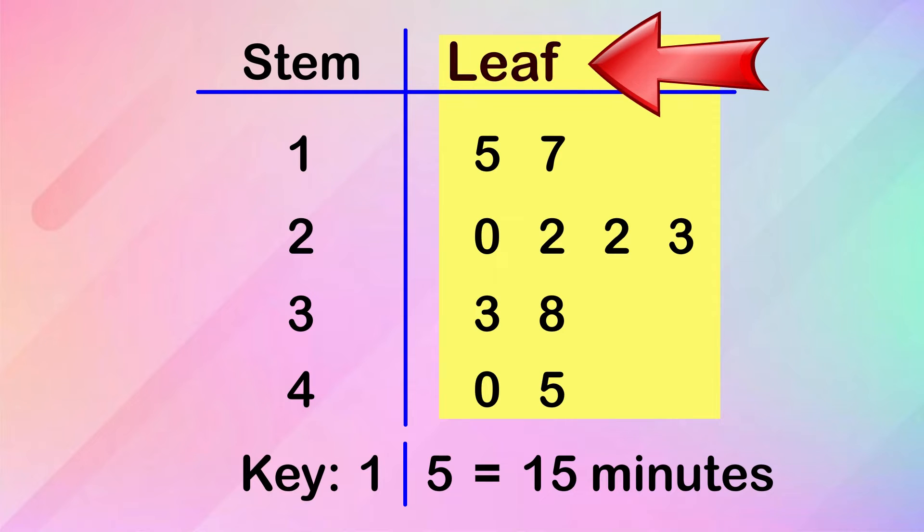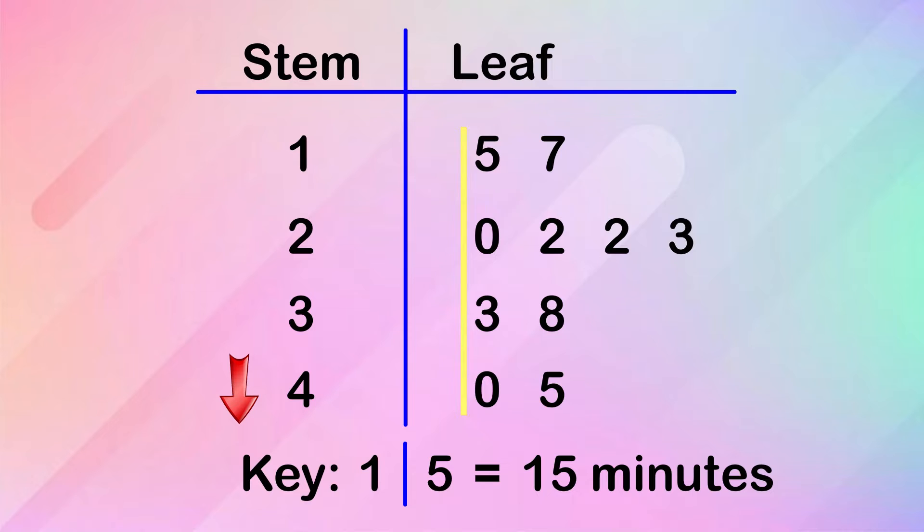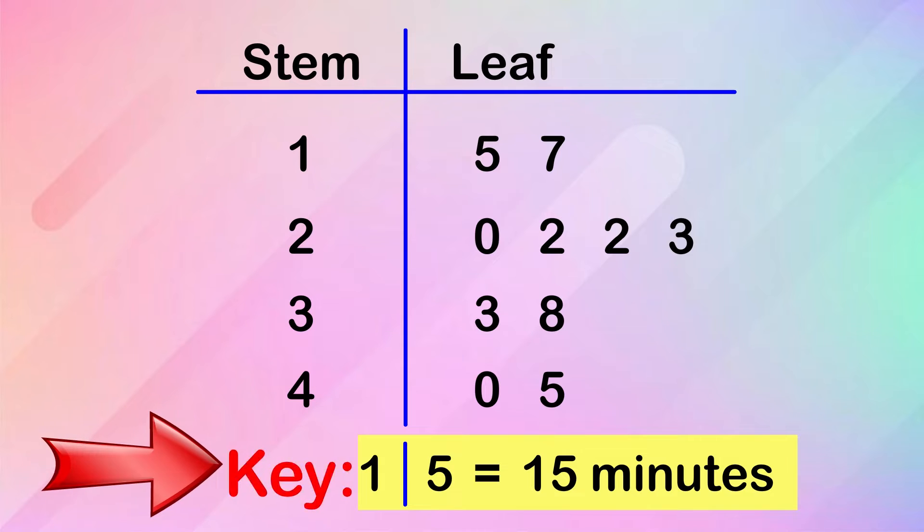The second column consists of the leaves. The stem values are listed one below another in ascending order, and the leaf values are listed left to right in ascending order. 1, 5, 15 minutes is the key.